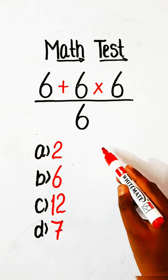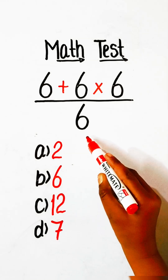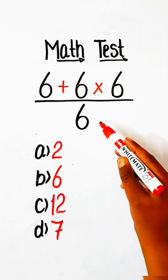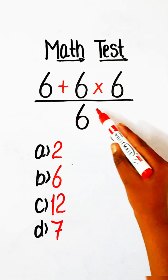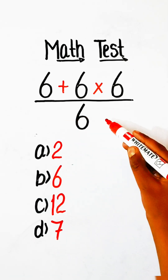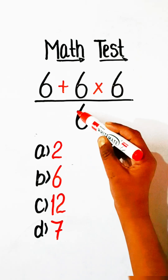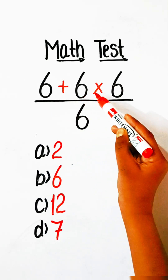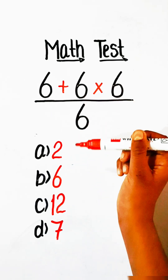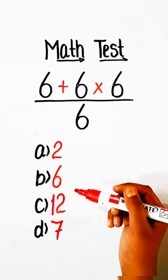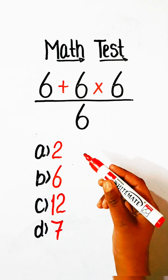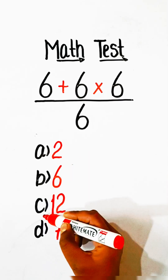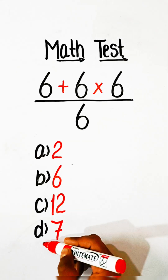Hello everyone, welcome back to my YouTube channel. In this video we will solve this basic math question: 6 plus 6 multiply by 6 upon 6 equals to what? Option A: 2, Option B: 6, Option C: 12, Option D: 7.